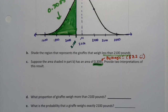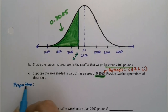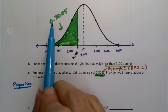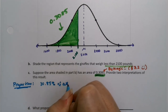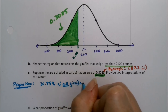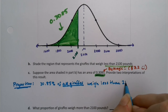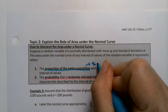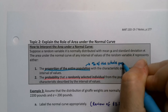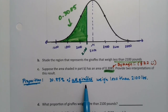What we're interested in right now is the two interpretations piece — there are two possible interpretations of that same area. The first is the proportion interpretation. You turn 0.3085 into a percent: 30.85% of all giraffes weigh less than 2,100 pounds. It's a proportion of the population — a percentage of the whole.